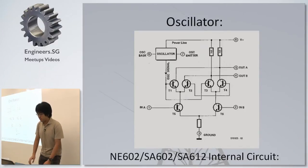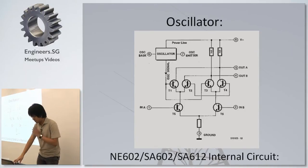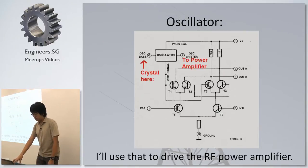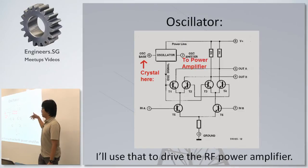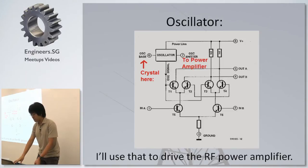You have this internal circuit here, and you have your oscillator stage at pin 6 and 7, which is just an NPN transistor. So I can just put a crystal there, and the emitter will be output to my power amplifier, and that's that for your transmit stage, actually.